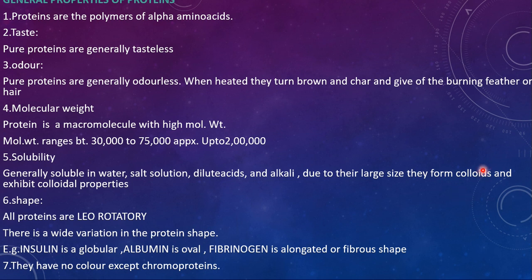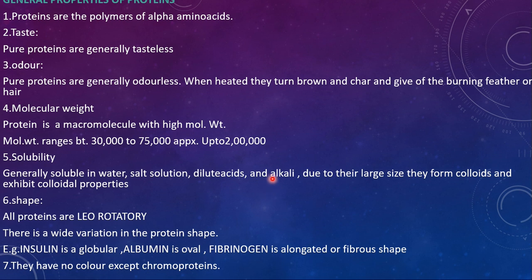Due to their large size, proteins form colloids and exhibit colloidal properties. What are colloidal substances? When you dissolve a substance in water, if it completely dissolves we call it soluble, and if the solute precipitates at the bottom, we call it insoluble. Colloids are substances that neither completely dissolve nor completely precipitate — they disperse throughout the solvent.